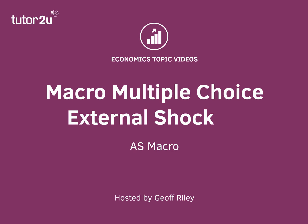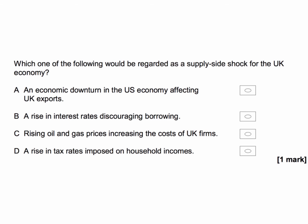Let's have a look at a macro multiple choice question on the topic of external shocks to the macro economy. Which one of the following would be regarded as a supply side shock for the UK economy? In other words, which one of the following is going to cause a shift in aggregate supply? Keep in mind that a shock is an external, unexpected economic event which creates disequilibrium in the economy.